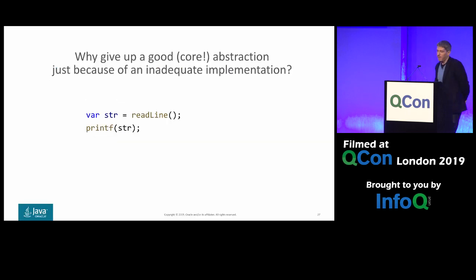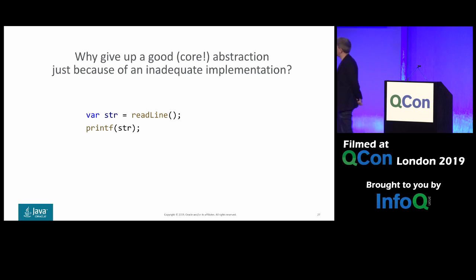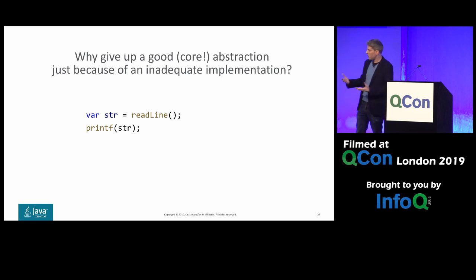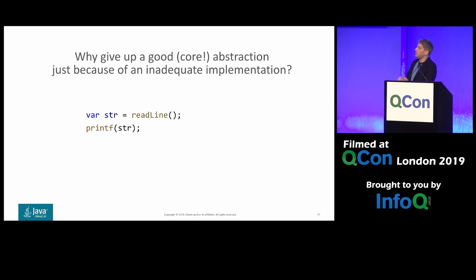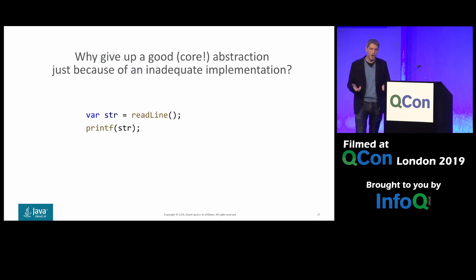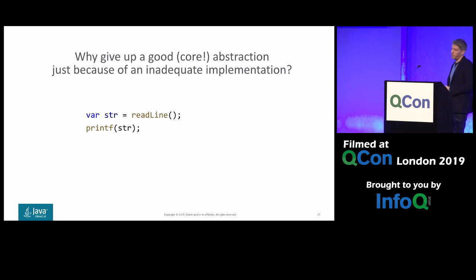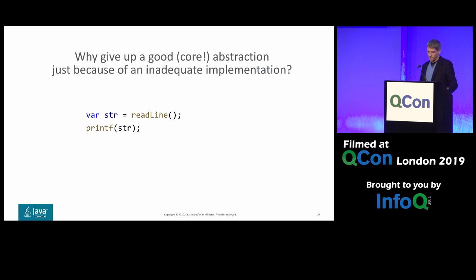Why give up at all? Imperative languages don't just handle input and non-determinism — they have a built-in notion of threads or processes and blocking, which is a good abstraction from a programming perspective. The only reason we sometimes want to avoid it is because the kernel's implementation of threads is too heavyweight. So why abandon something that's not only a good abstraction but a core abstraction of this paradigm, just because of an inadequate implementation? The obvious solution, instead of changing how we program, is to change the implementation — and that is what Project Loom is trying to do.